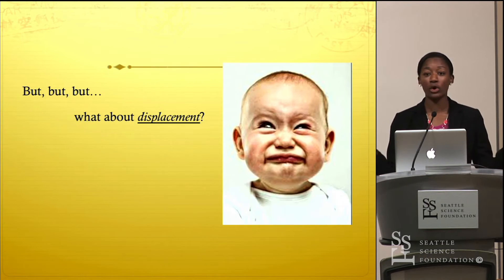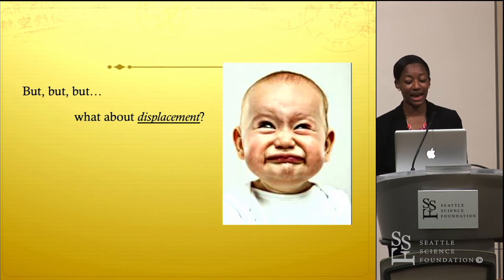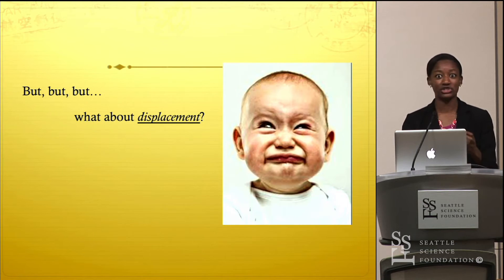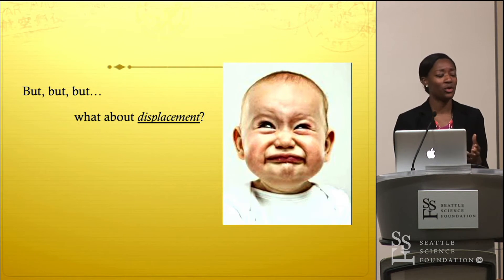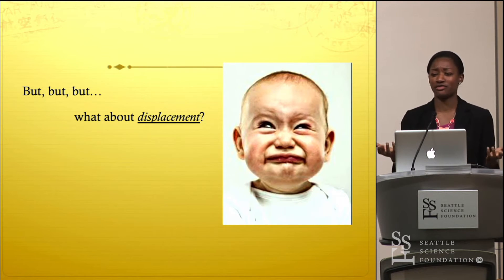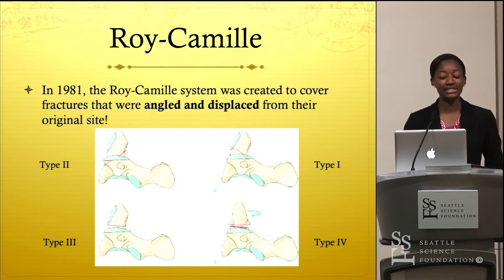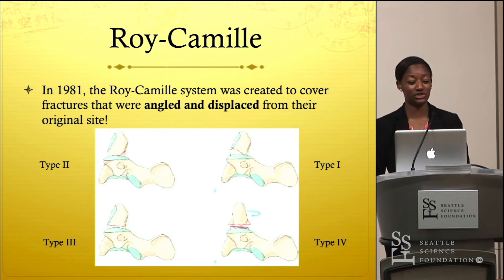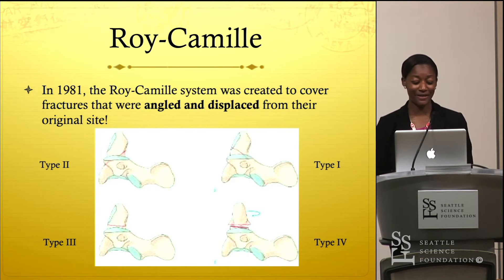What about displacement? The Anderson-D'Alonzo system didn't address the idea that fractures don't have to stay at their original site. In 1981, the Roy-Camille system was developed to cover fractures that were angled and displaced from the original site.